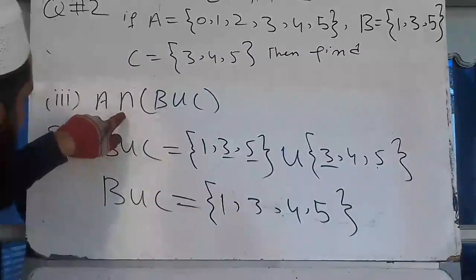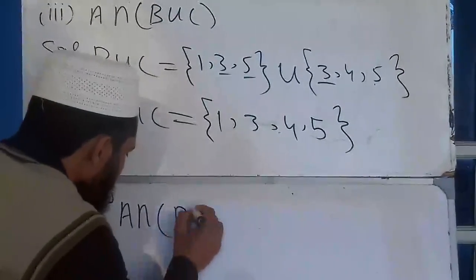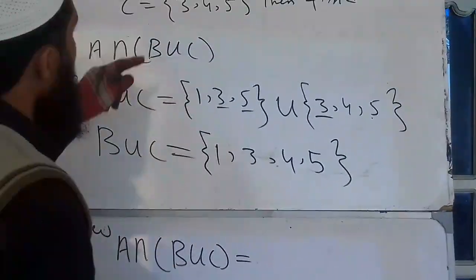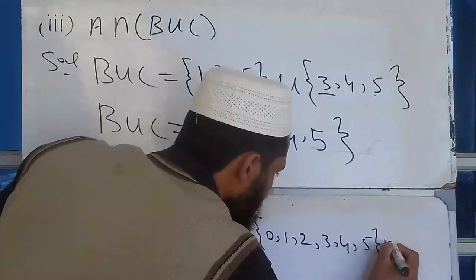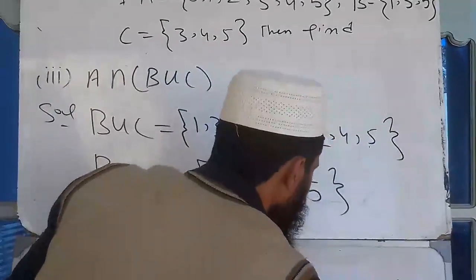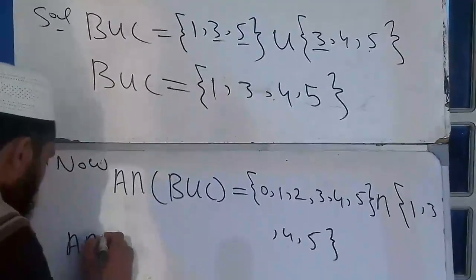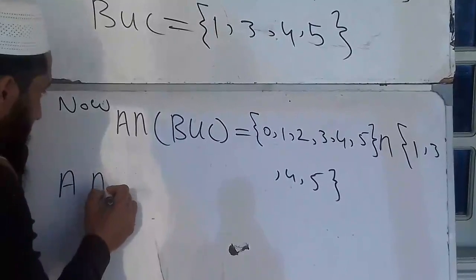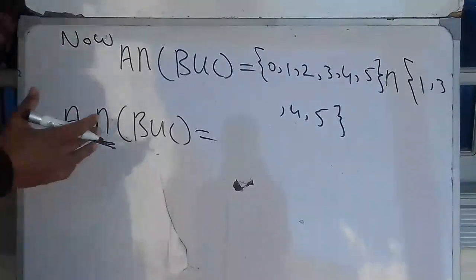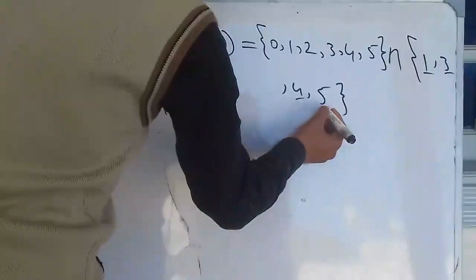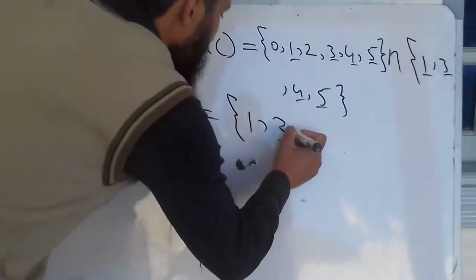Then B union C, then A intersection B union C. So now A intersection B union C equals A set {0, 1, 2, 3, 4, 5} intersection {1, 3, 4, 5}. We are taking only common elements. The common elements are 1, 3, 4, 5. So A intersection B union C equals {1, 3, 4, 5}.